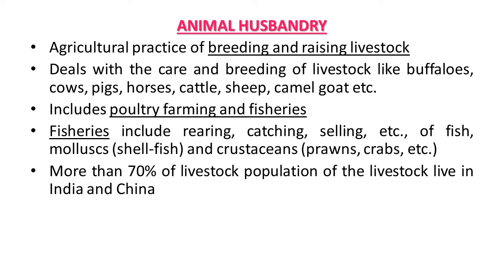Hello students, with this lecture we are going to start Chapter 9: Strategies for Enhancement in Food Production. In this chapter we are going to study main topics like animal husbandry, plant breeding, single-cell proteins, and tissue culture. With ever-increasing population of the world, enhancement of food production is a major necessity. Several new techniques like embryo transfer technology and tissue culture techniques are going to play a vital role in further enhancing food production.